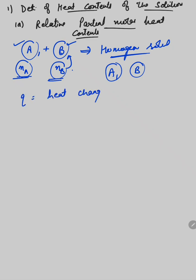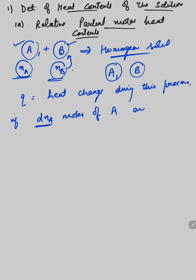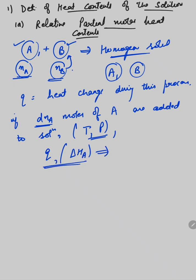Q is the amount of heat change during mixing. If dnA number of moles of A — a small amount — are added to the solution, then there should be some heat change in the system. If dnA moles of A are added to the solution at constant temperature and pressure, then there is a corresponding heat change.